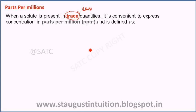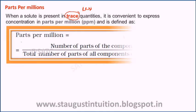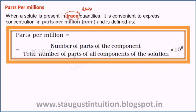It is convenient to express concentration in parts per million, or ppm, and it is defined as: parts per million equals the number of parts of the component divided by the total number of parts of all the components of the solution, multiplied by 10 raised to the power 6.